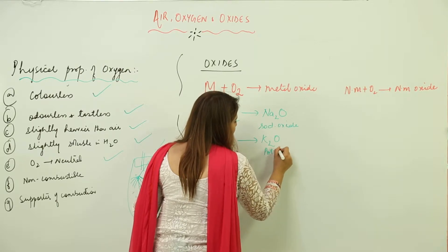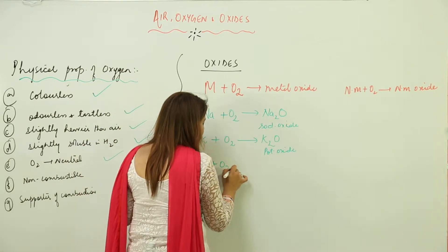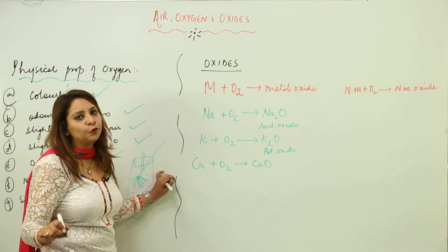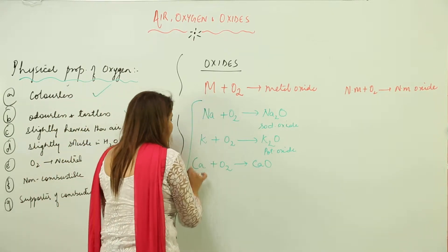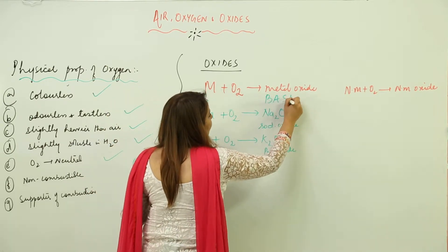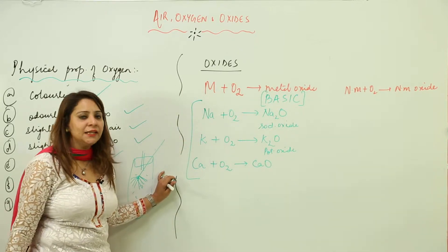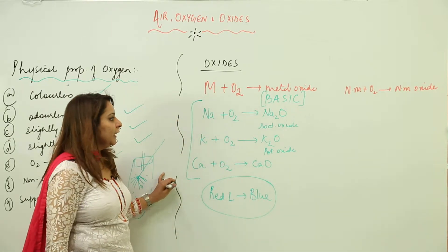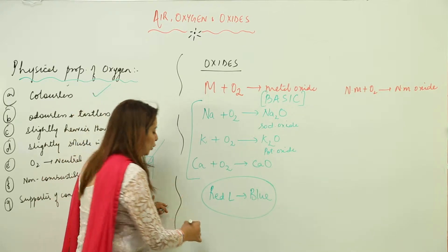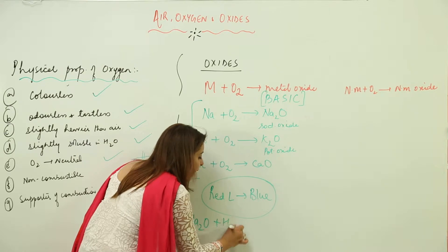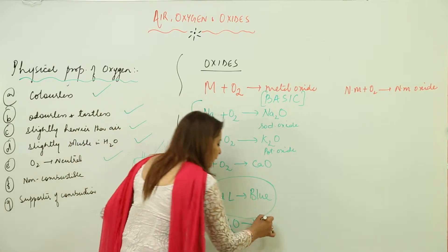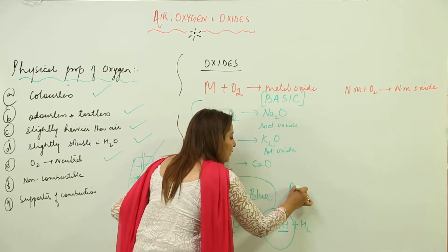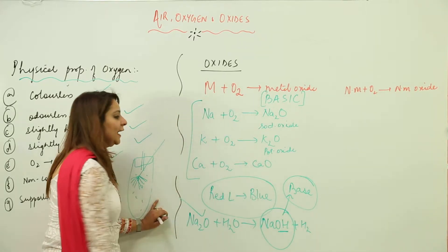Likewise, potassium (K) plus O2 forms potassium oxide, and calcium reacts with oxygen forming calcium oxide. The formulas differ depending on valency, but all of them react with oxygen to form oxides. All metal oxides are basic in nature — they turn red litmus paper blue. When metal oxide reacts with water, it forms a metal hydroxide, and since hydroxide (OH) is a base, metal oxides are basic in nature.